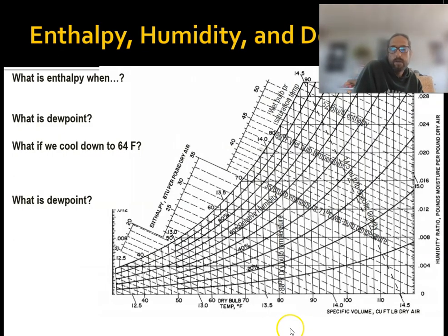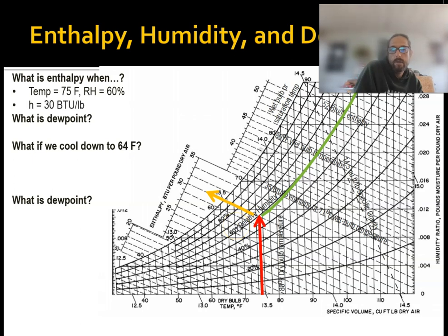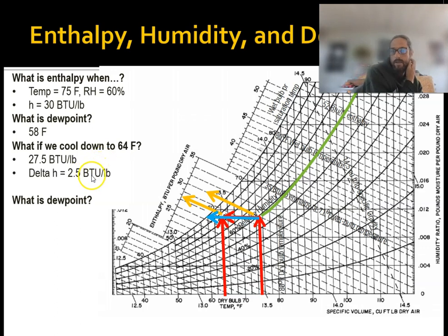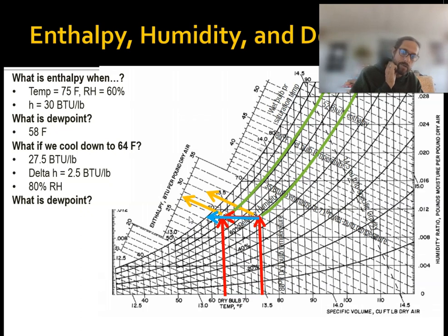Let's look at some implications for dew point. With a dry bulb of 75°F and relative humidity of 60%, our enthalpy is 30 BTUs per pound, and our dew point — going directly to the left — is about 58°F. Let's cool this down to 64°F dry bulb. Our enthalpy drops from 30 to 27.5 BTUs per pound, giving us a delta H of 2.5 BTUs per pound. We've also increased our relative humidity. The dew point — you go directly to the left — so if we only go left or right, that dew point's not going to change.